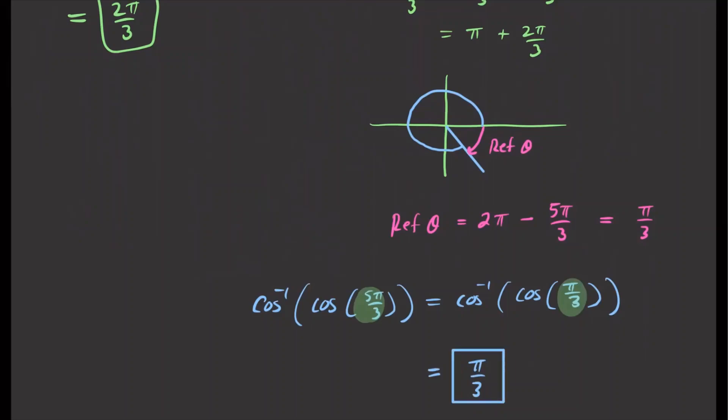That's how you apply the cancellation property. The same approach applies for tangent and its inverse, so feel free to work through those examples on your own. See you next time.